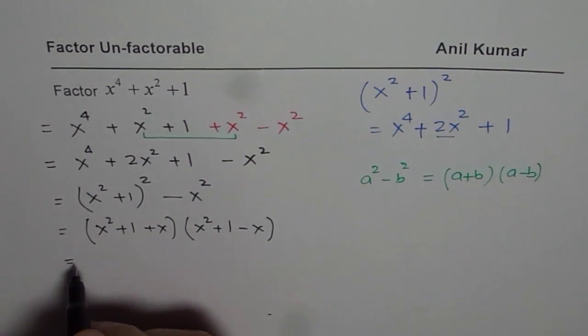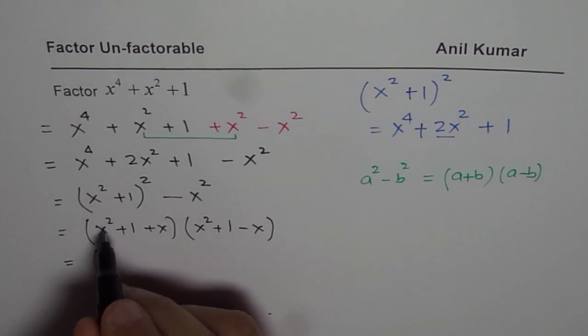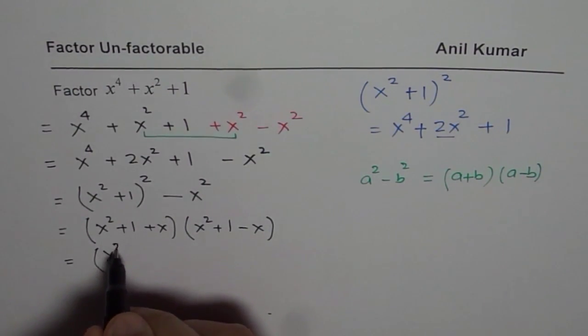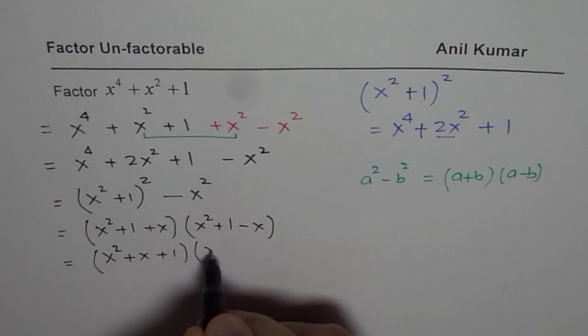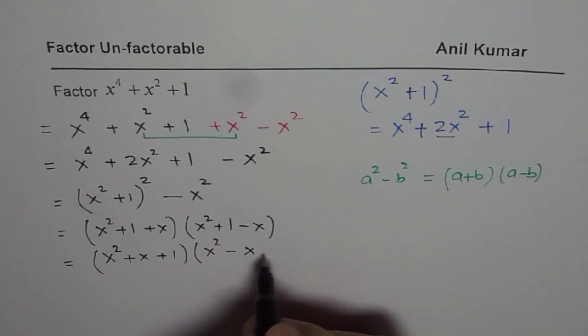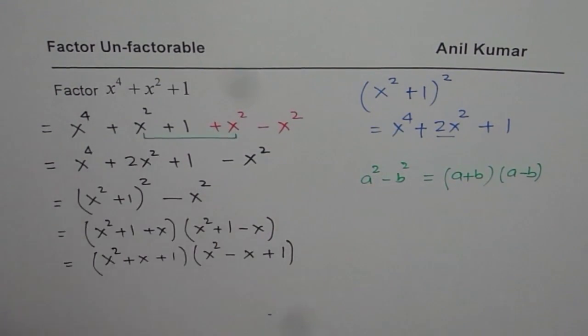I will just rearrange. It is always better to write with highest degree first. So we will rearrange and write this as x square plus x plus 1 times x square minus x plus 1. So, that is the factored form of the given quartic trinomial. I hope you appreciate it. Thank you and all the best.